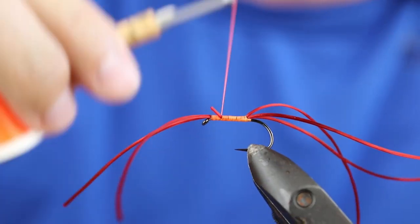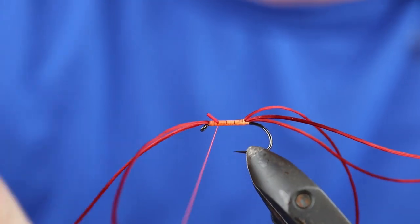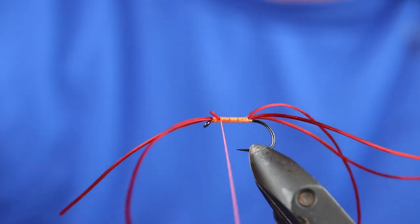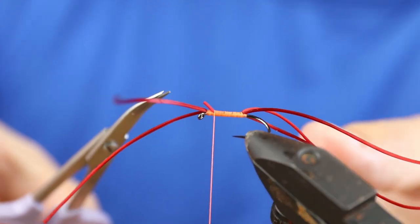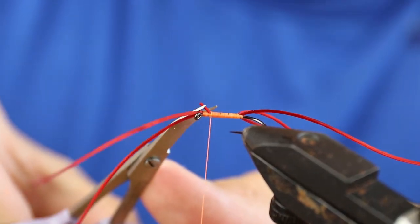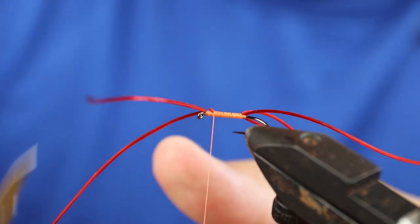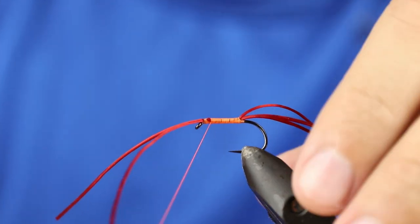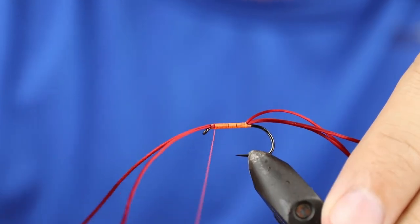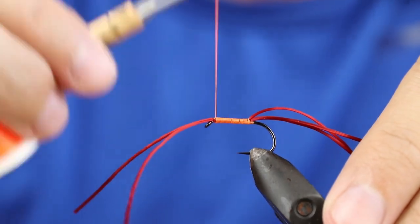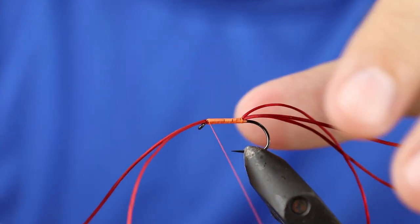And the way I'd fish this, there's two real ways: basically either on some sort of sinking line like a slow glass or a fast glass and pulling it or roly-polying it, or the alternative is a tip line or a floater, a long leader like an 18-foot fluorocarbon leader, and then just fish it dead slow, almost like you're fishing nymphs.